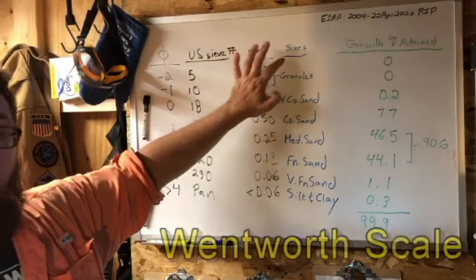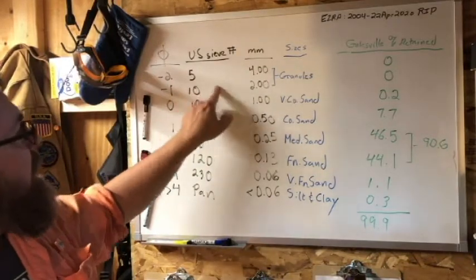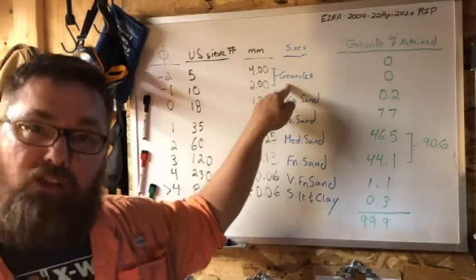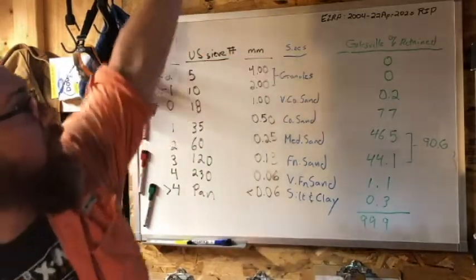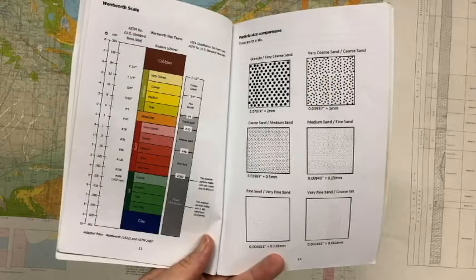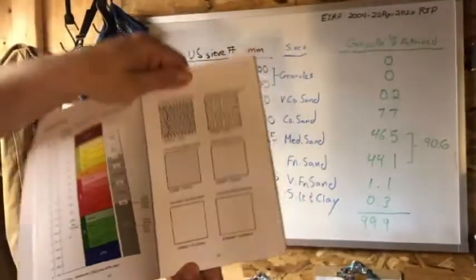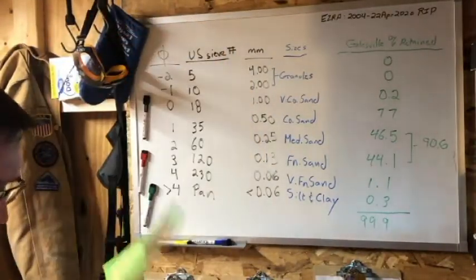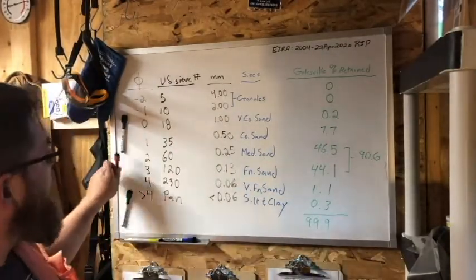These are the Wentworth sizes. In geology we use the Wentworth scale. Anything retained on number 10 but passing number 5 would be granule. Depending on the nature of our sandstone, we can include that with sands or gravels. In my sedimentary lab reference book, this is the breakout here—that's the Wentworth scale broken down, and this shows perfectly spherical objects at certain grain sizes.